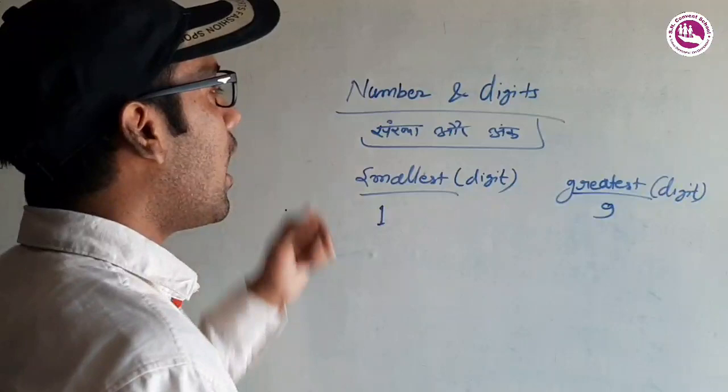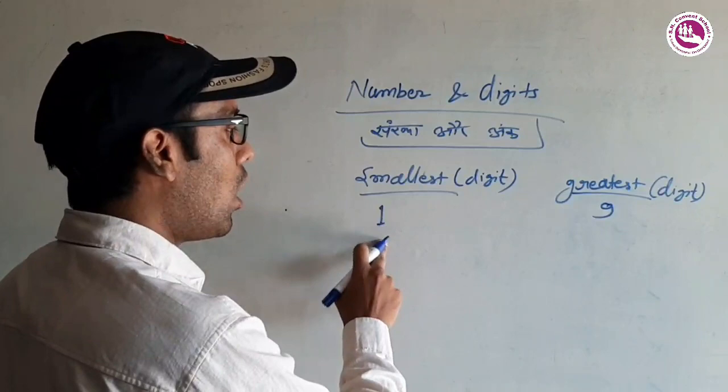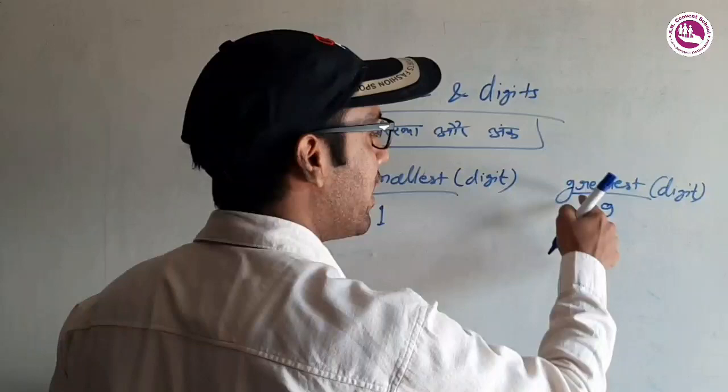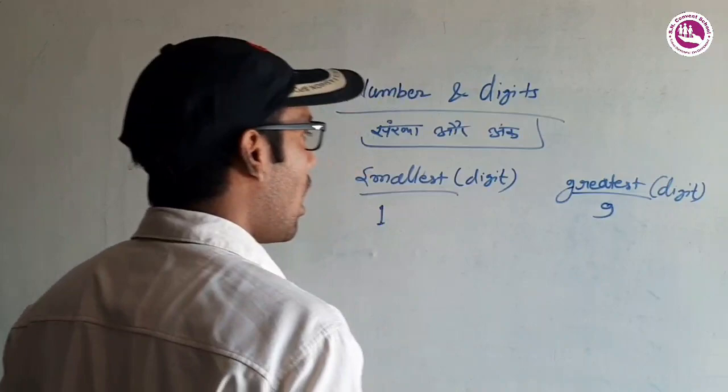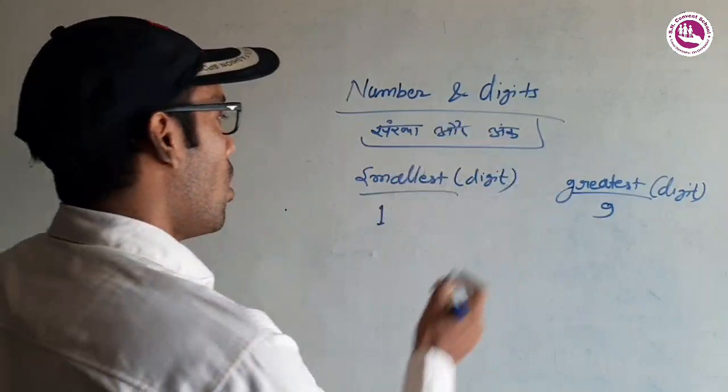So, koi bhi sankhya — kitne ank hai — yoh janega. The smallest number is one; that is the one-digit smallest number. And one-digit ka greatest number kya hota hai? Nine. Nine se bada koi one-digit number nahi hota, aur one se chota koi one-digit number nahi hota.